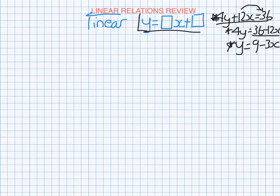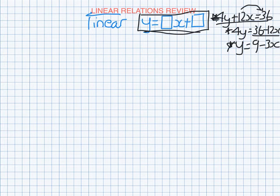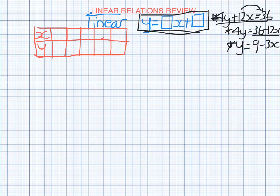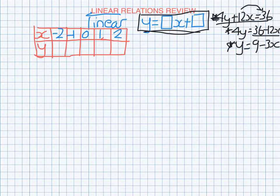So how would you graph something like that? The method we've gone through is: you draw up a table of values, choose the x values, find the y values, and then plot them as points. So let's go ahead and graph this. We'll start by drawing up the table of values. Your table of values always looks like this. You choose the x values — I suggest you always choose negative 2, negative 1, 0, 1, and 2 for simplicity.